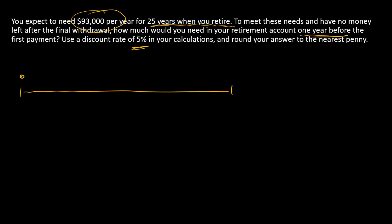Let's start with a timeline to get a picture of what is needed. We've got 25 periods, and in each period we have a $93,000 payment. After the final payment in time 25, we want nothing left. So the question is: how much do you need in the account one year before the first payment, right here on the timeline?